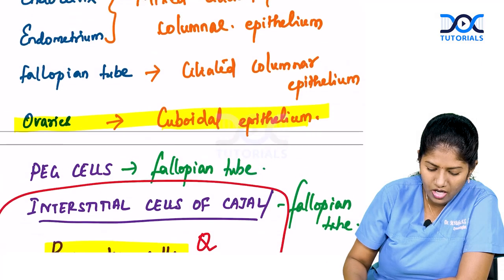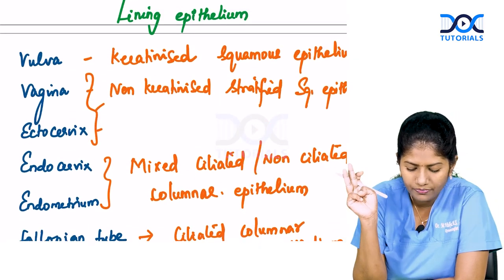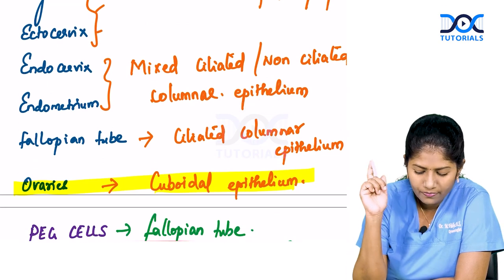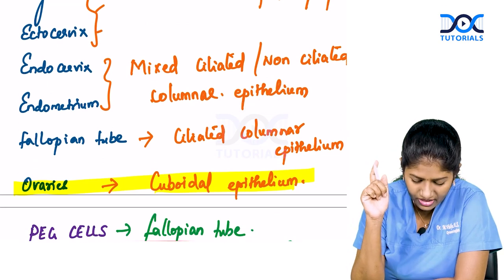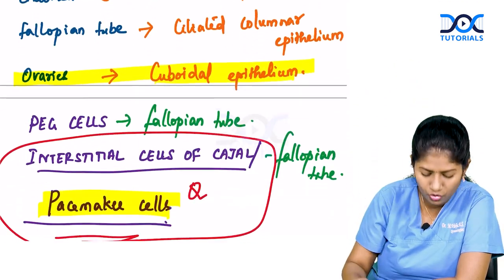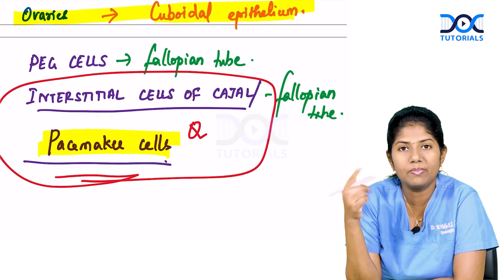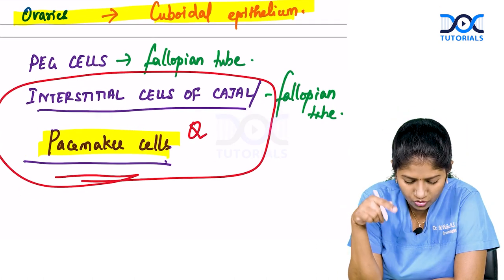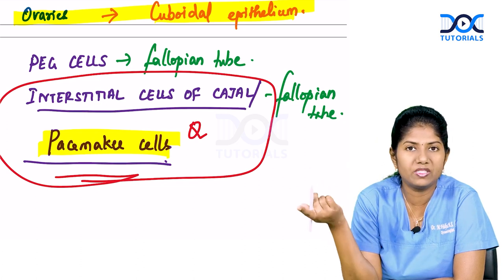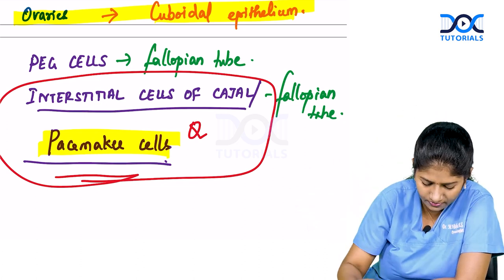Summary: vulva and vagina are lined by squamous epithelium; endocervix and endometrium by columnar epithelium; fallopian tube by ciliated columnar epithelium; ovaries by cuboidal epithelium. Pex cells are seen in the fallopian tube. Interstitial cells of Cajal are otherwise called pacemaker cells and are also seen in the fallopian tube.